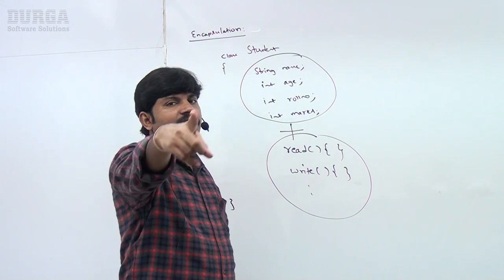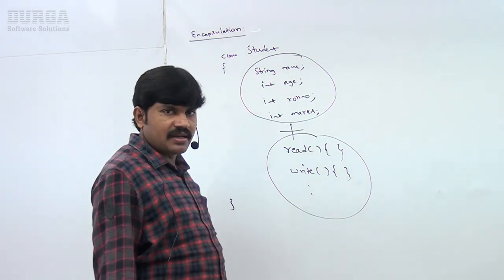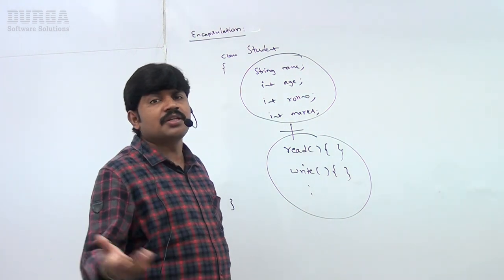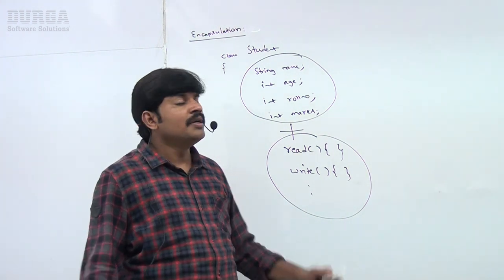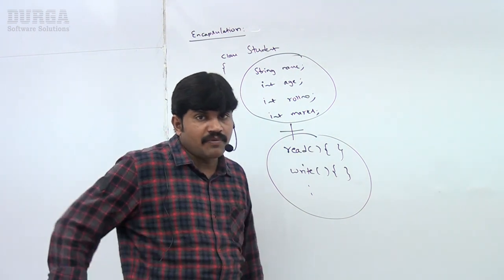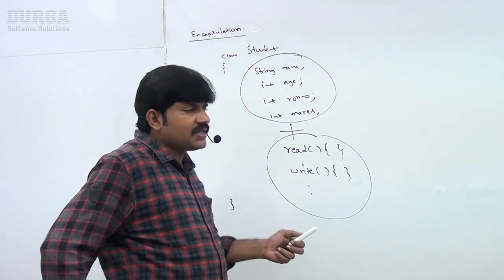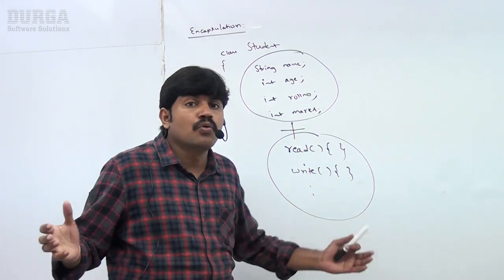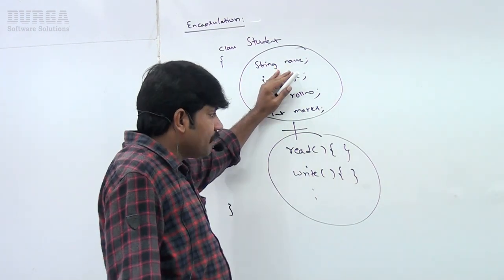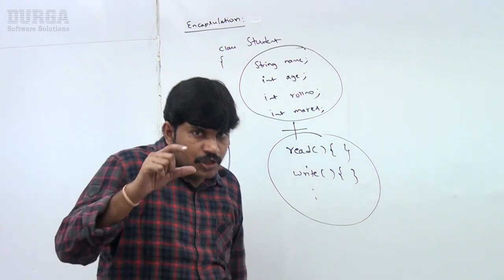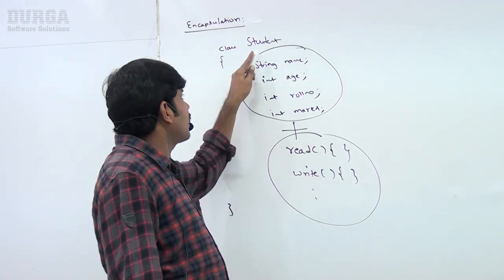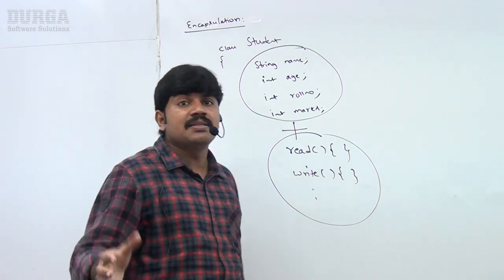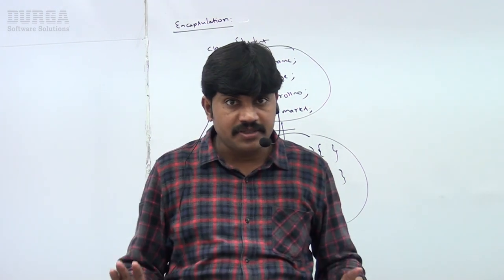Every Java class is an example of encapsulation. The process of grouping data members and the corresponding methods into a single unit is the concept of encapsulation. Now in reality, a more practical definition: if any component follows data hiding and abstraction, that component is said to be an encapsulated component.